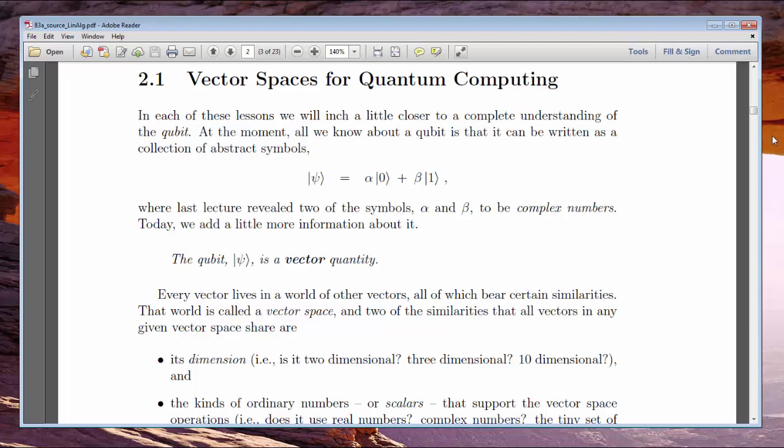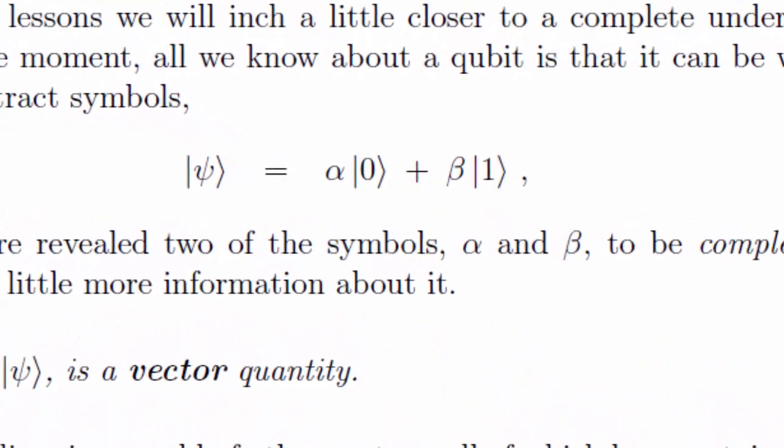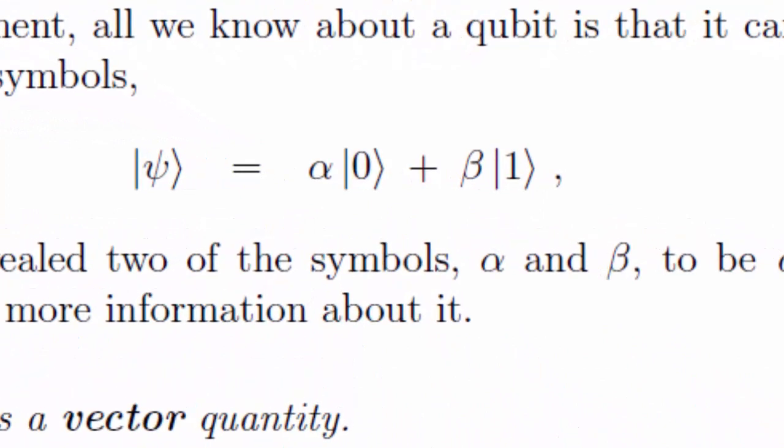Last time, we checked off the box called Complex Arithmetic. So, although we still don't know what a qubit is, we at least know that the two Greek letters alpha and beta stand for complex numbers, and we know how to manipulate those creatures when the time comes.